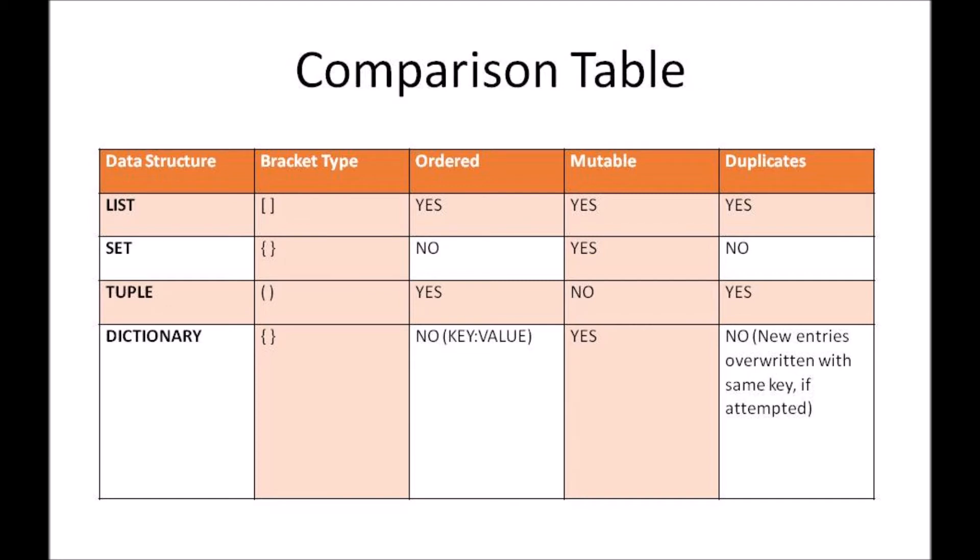So if you consider list, list is ordered, it is mutable and it accepts duplicates. When it comes to set, set is unordered, it is mutable and it does not accept duplicates.